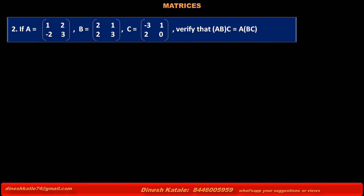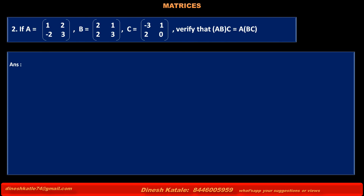Problem 2. If matrix A is equal to [1, 2, -2, 3], matrix B is equal to [2, 1, 2, 3], and matrix C is equal to [-3, 1, 2, 0], verify that (AB)C is equal to A(BC).